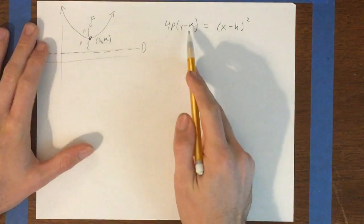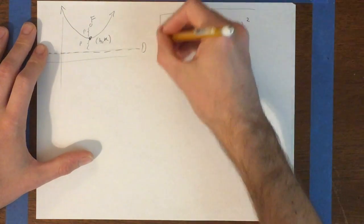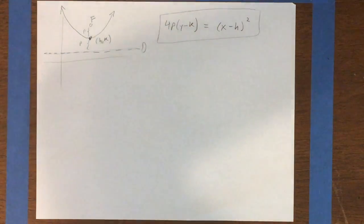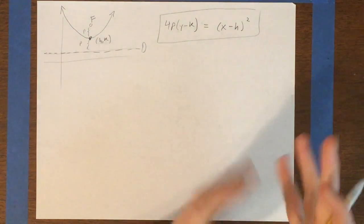So subtracting k directly from the y and subtracting h directly from the x produces an equation which has been shifted to a different location with a new vertex.